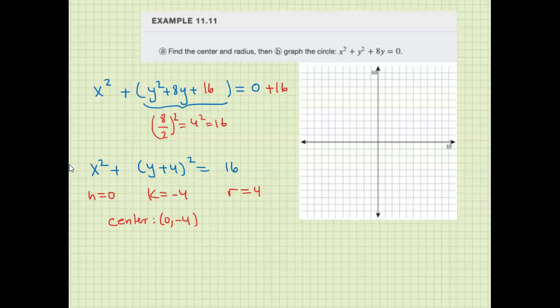So 0, negative 4 is right here. Then the radius of 4, we go 4 units right, and 4 units left, 4 units up, and 4 units down. And then the circle looks like this.